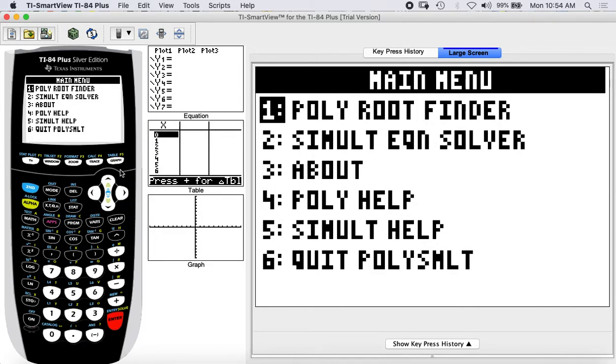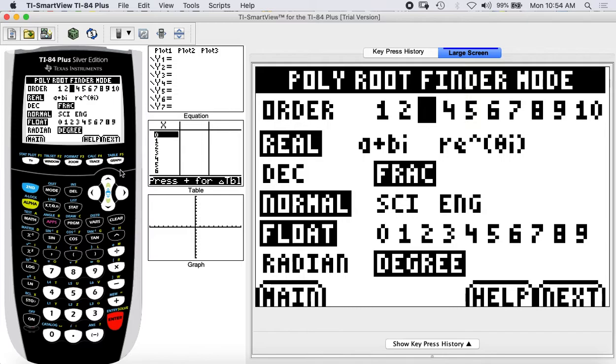You see here the degree of the function: one, two, three, four, five. I am just changing whatever I want. If second degree, second; if third degree, three. And then here there is a next button.